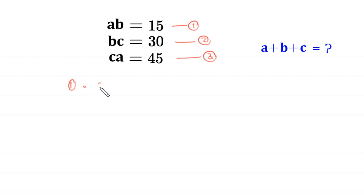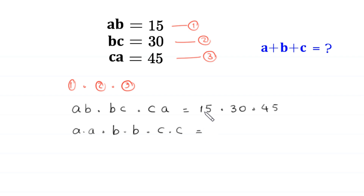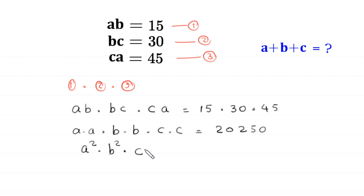Equation 1 times equation 2 times equation 3. So A·B times B·C times C·A is equal to 15 times 30 times 45. This will become A times A times B times B times C times C is equal to 20,250.